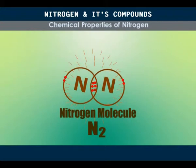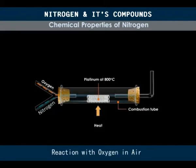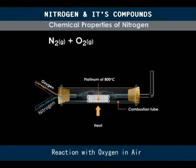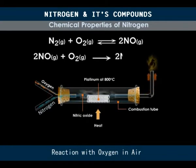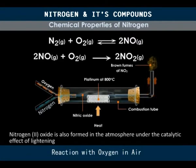Nitrogen does, however, react with some substances under certain conditions. In air, nitrogen and oxygen will combine when heated to a high temperature in the presence of a platinum catalyst to form nitrogen-2 oxide. This is a reversible reaction. The nitrogen-2 oxide is immediately oxidized further by more oxygen to nitrogen-4 oxide. Nitrogen-2 oxide is also formed in the atmosphere during thunderstorms under the influence of heat produced by flashes of lightning.